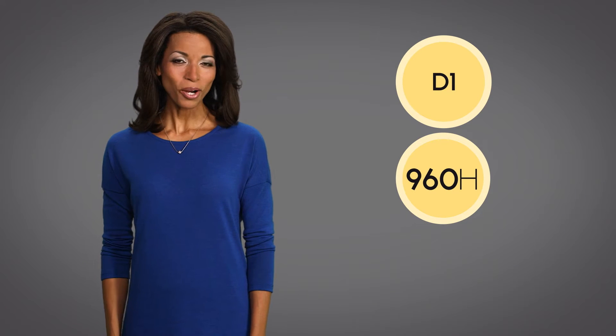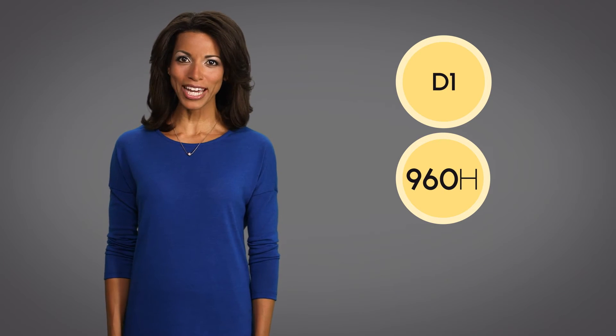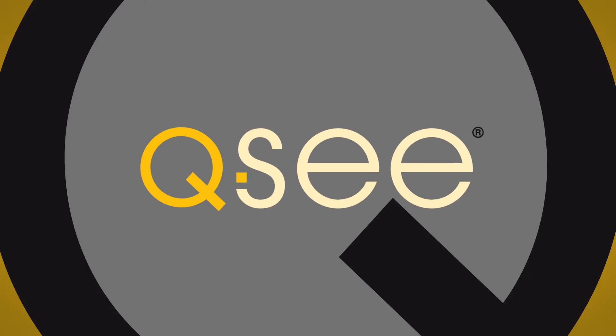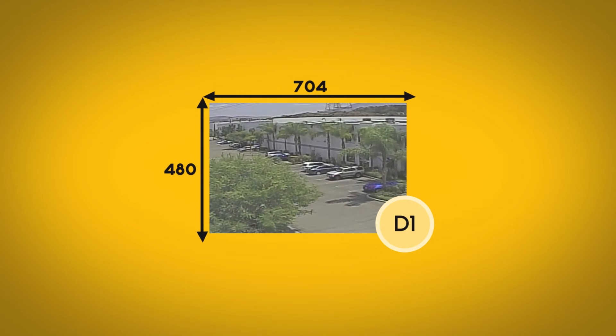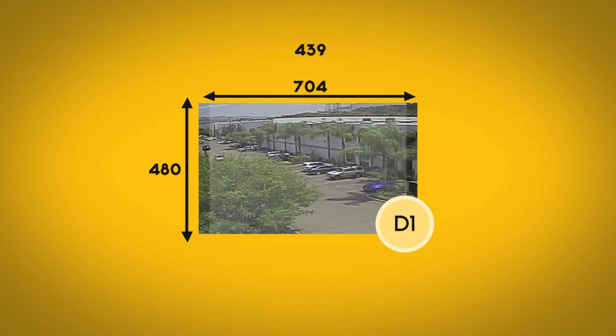D1 and 960H refer to different sizes of security camera video technology. People usually refer to D1 as standard definition. It's similar to what you were used to seeing on TV in the 90s.